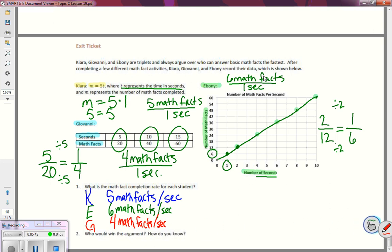So taking a look at our final question, who would win the argument, and how do you know? Well, they're triplets, and I would imagine that they're arguing over something at some point in time, or not. But in this case, how would we know? We're going to look at the facts.